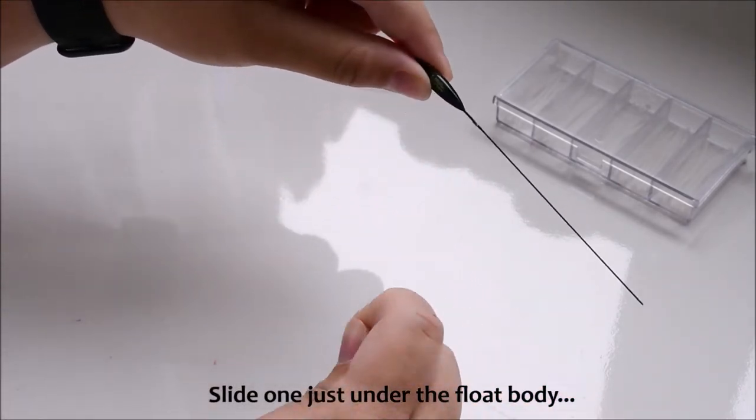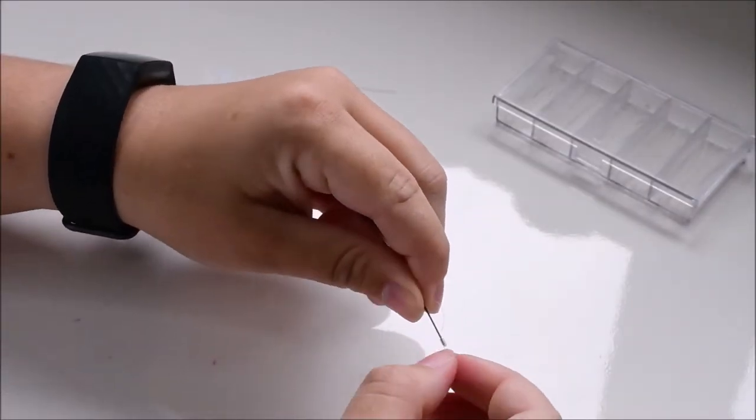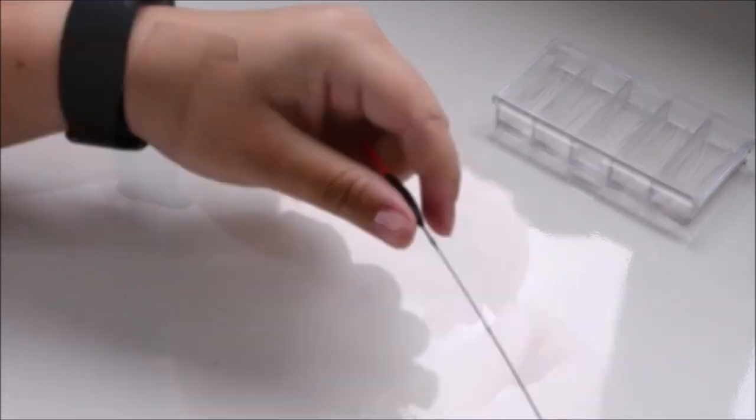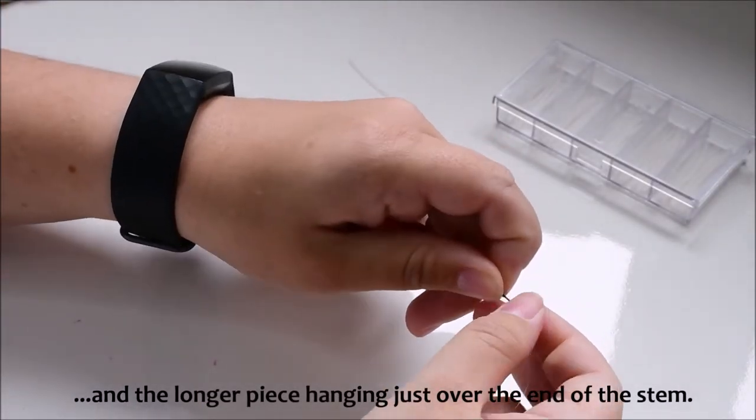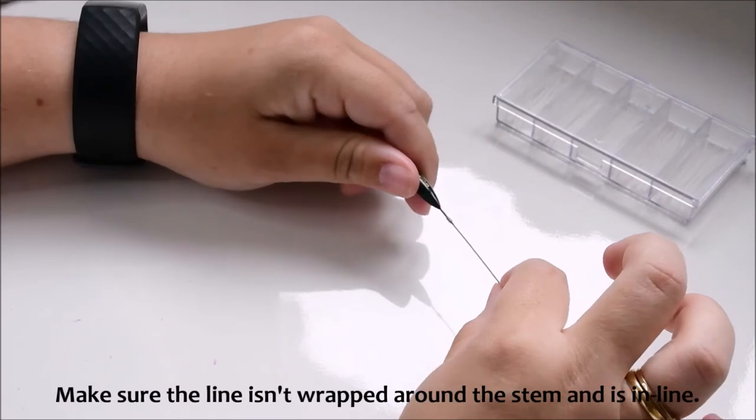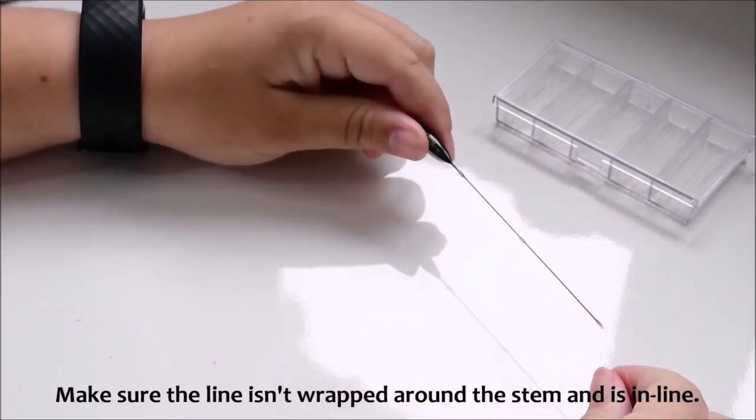Slide one just under the float body, one in the middle of the stem and the longer piece hanging just over the end of the stem. Make sure the line isn't wrapped around the stem and is in line.